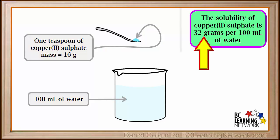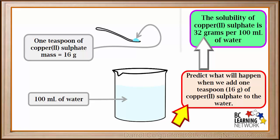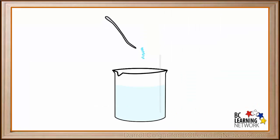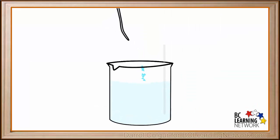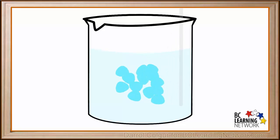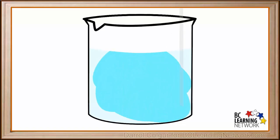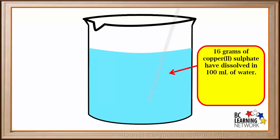Remember, the solubility of copper sulfate is 32 grams per 100 milliliters of water. Predict what will happen when we add 1 teaspoon, or 16 grams, of copper sulfate to the 100 milliliters of water in the beaker. We'll add the copper sulfate to the water and stir. We see that 16 grams of copper sulfate has dissolved in 100 milliliters of water.